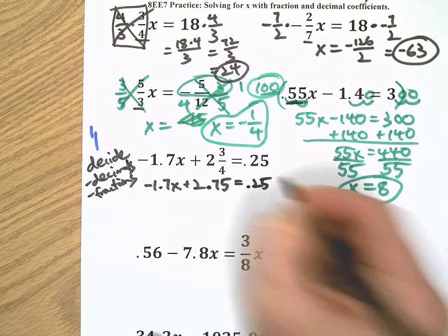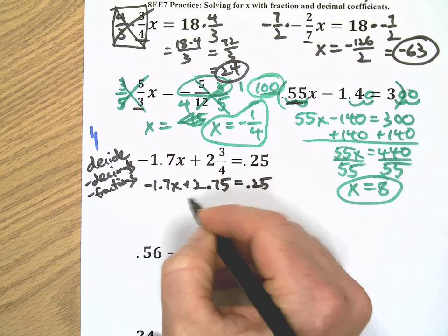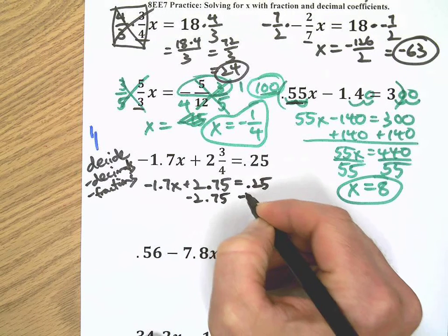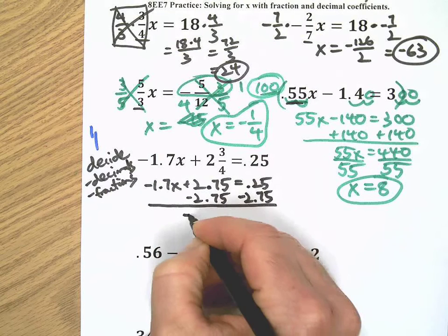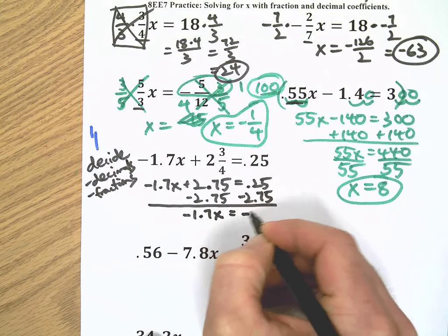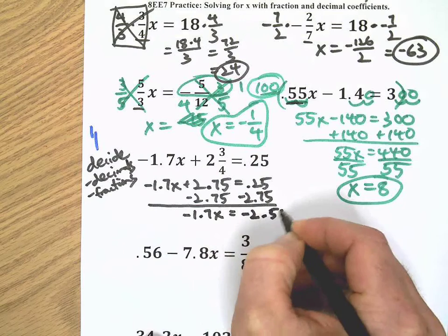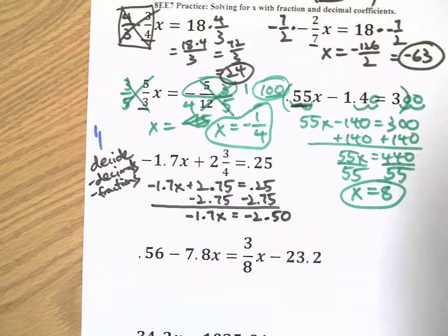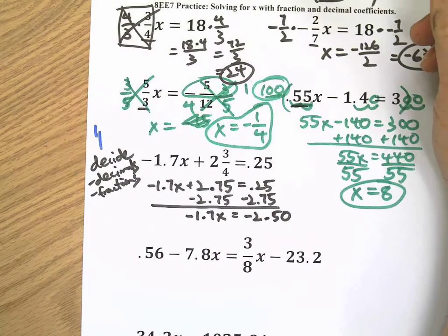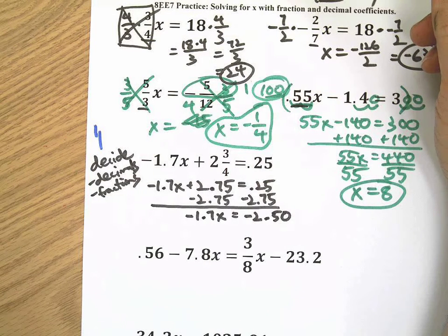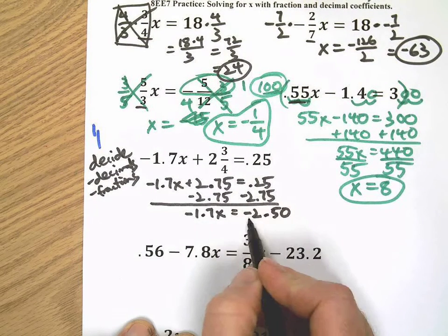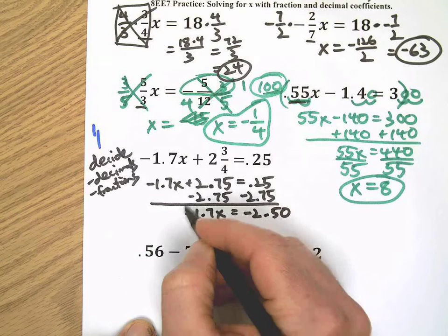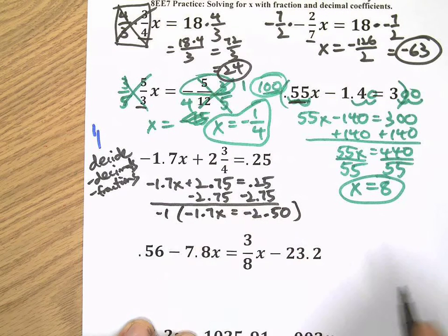Now I'm going to take away 2.75 from both sides. Did I do something wrong here? Let me look at this. Two and three quarters, I'm feeling pretty good about that. Now since the sign is negative on both sides, we can multiply everything by negative one, which makes the signs positive on both sides.